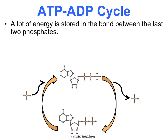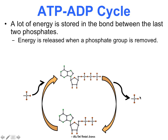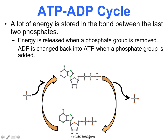A lot of energy is stored in the bond between the last two phosphates — that's where the majority of the energy is. Energy is released when the phosphate group is removed, and then ADP is changed back into ATP when we add a phosphate group again. This ADP is being recycled — either we're adding a phosphate and energy, or we're releasing a phosphate and energy. The only thing recycled is the ADP itself, getting charged up and then emptied.